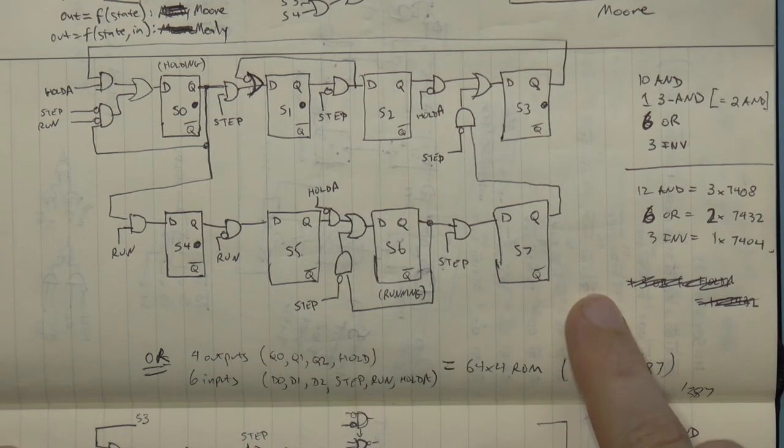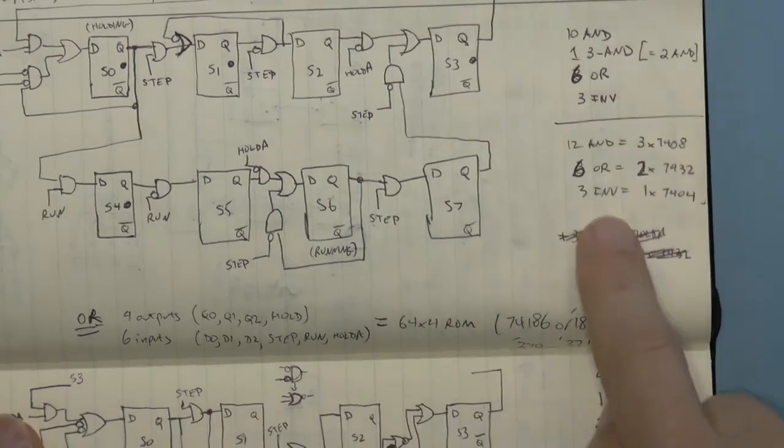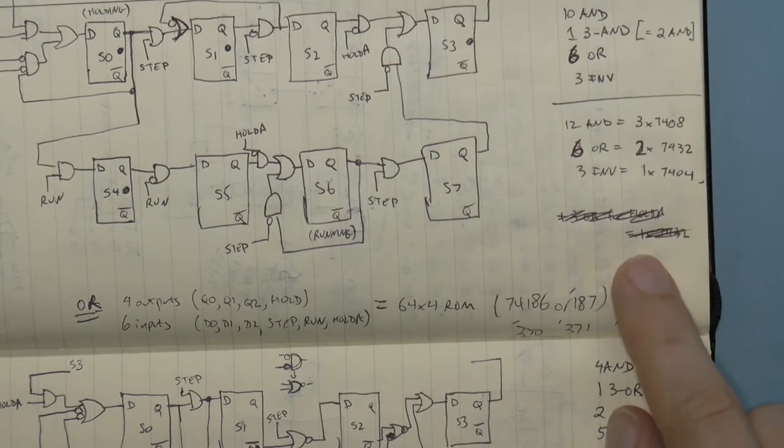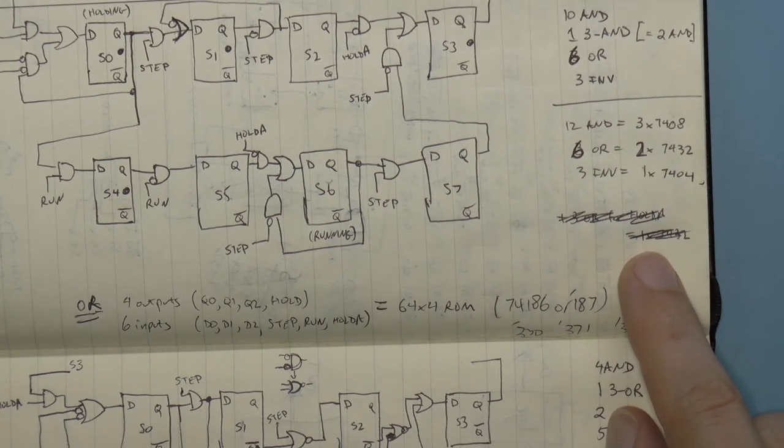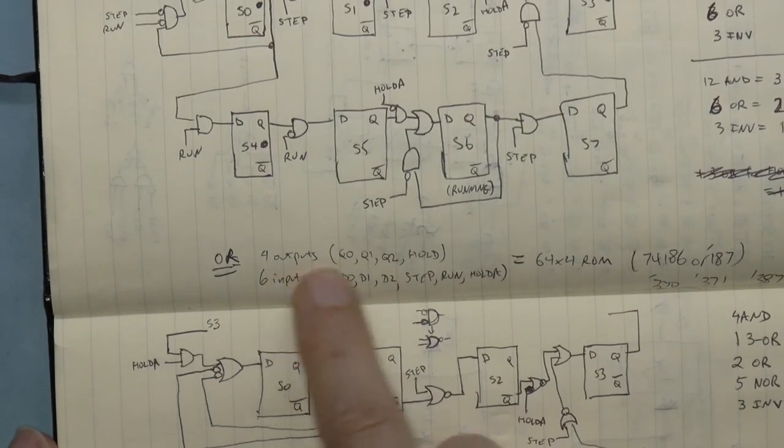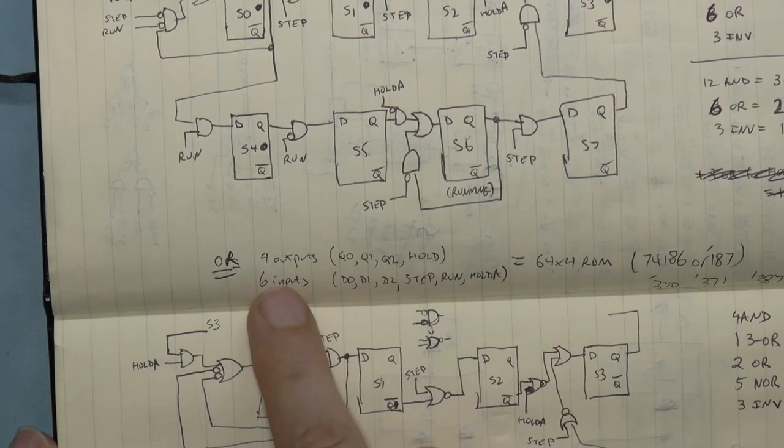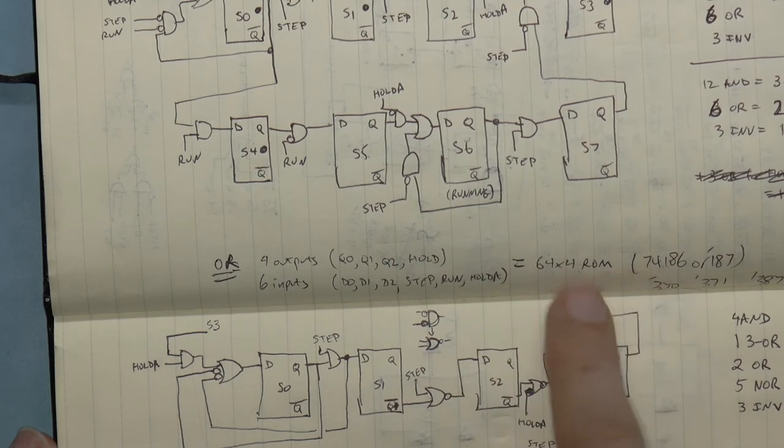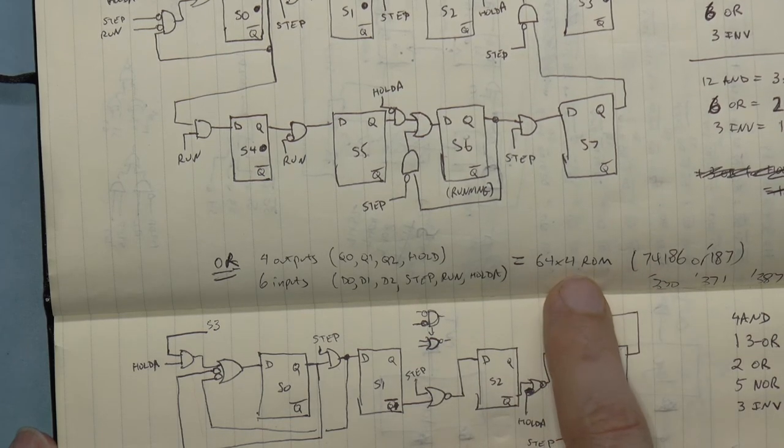Count up all the gates, and we come up with a total of 6 chips required, not counting the flip-flop chips. Now, 6 chips is an awful lot. But, if you think about it, we really have just 4 outputs, hold, and 3 bits of state.